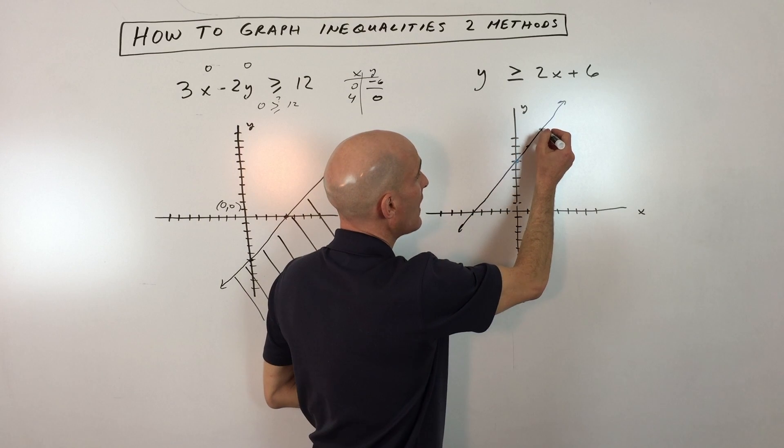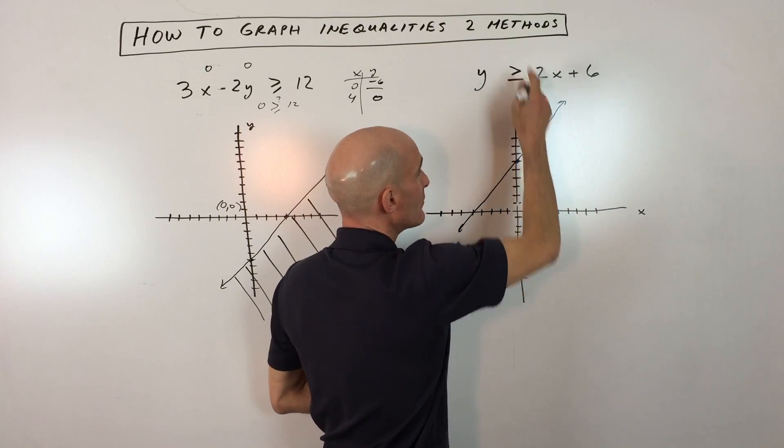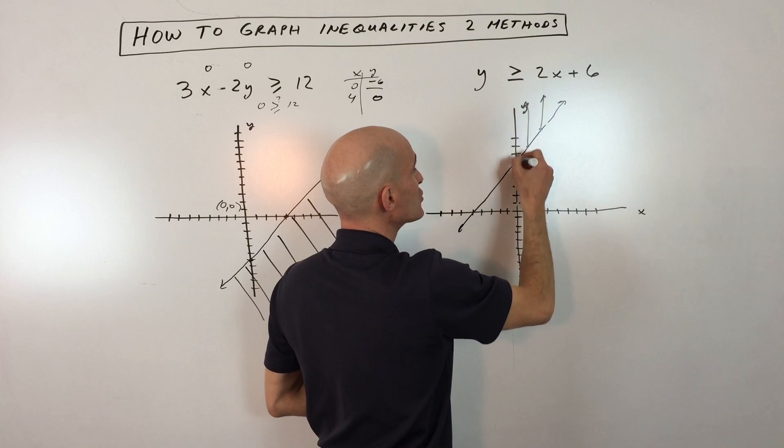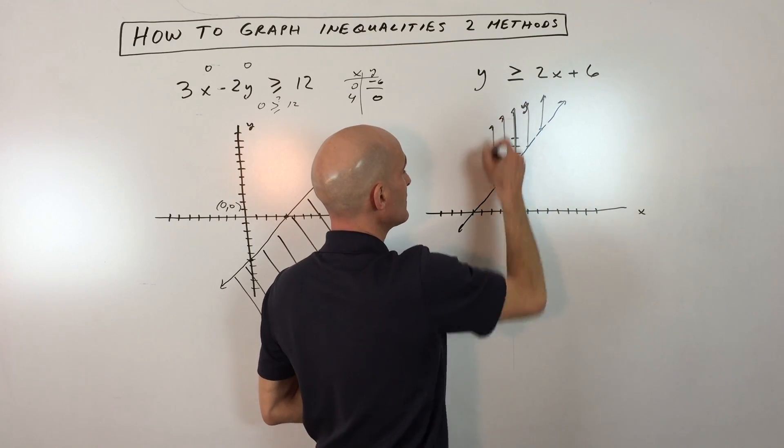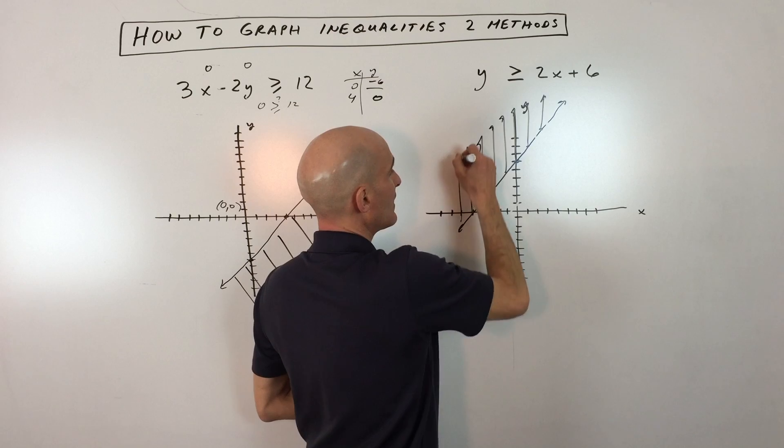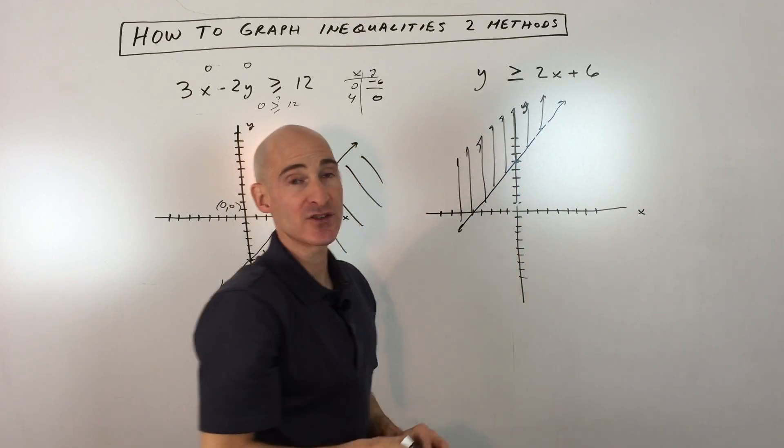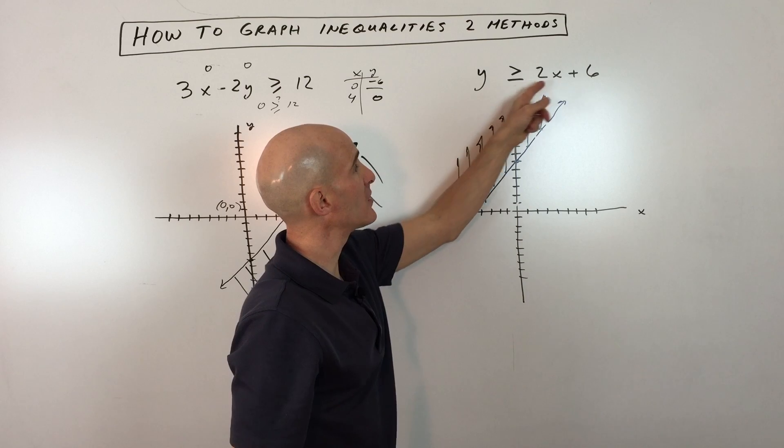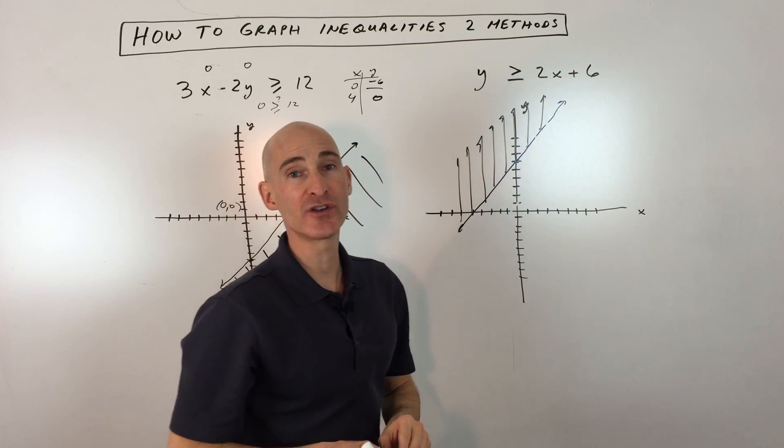So what I would do is pick any point on the line greater than you're shading above, less than you would shade straight down like this. So I'm just shading straight up like this, greater than, and so this is the region here that we want. So any point in this region, if you pick the coordinate of that point and put it in for x and y, it will make this inequality true.